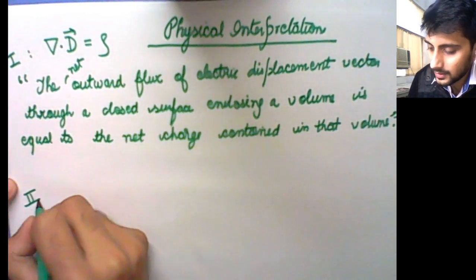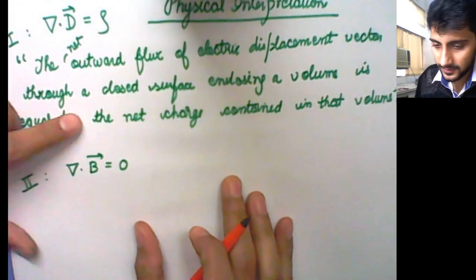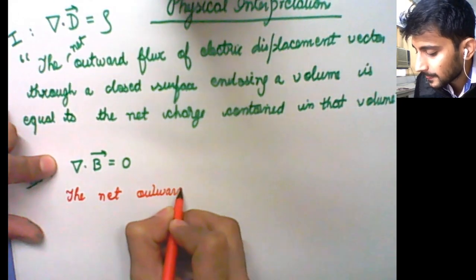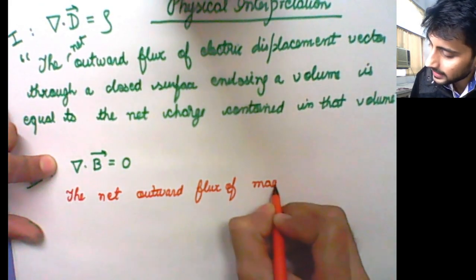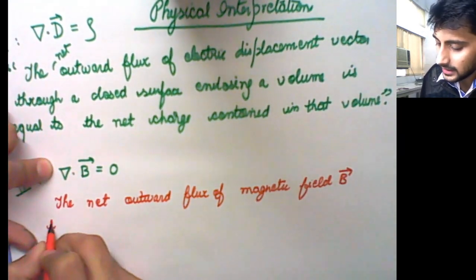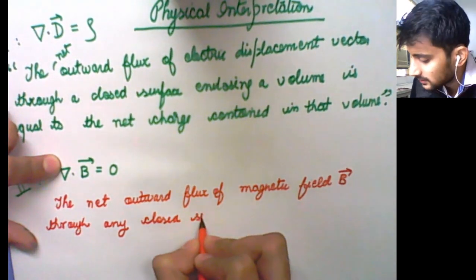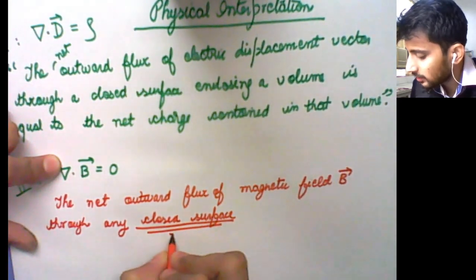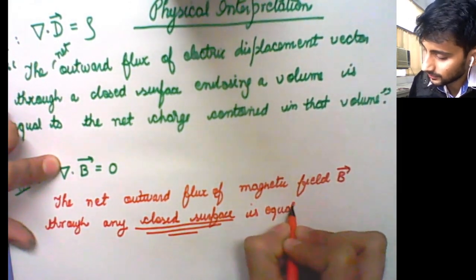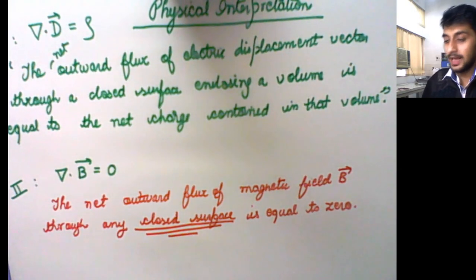For the second Maxwell equation, the divergence of magnetic field B equals zero. It means that the net outward flux of the magnetic field B through any closed surface is equal to zero. This is also called the statement that magnetic monopoles do not exist.